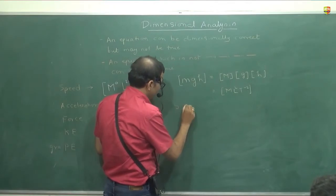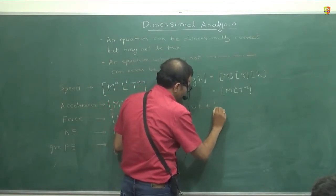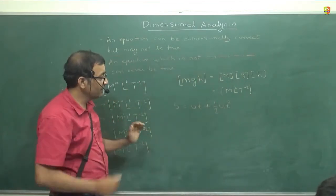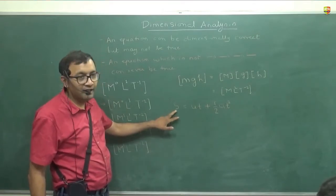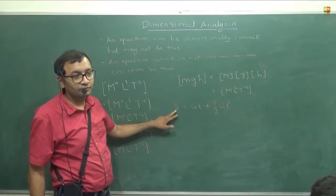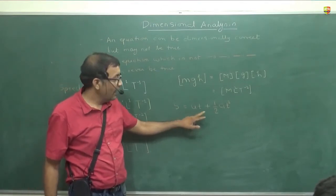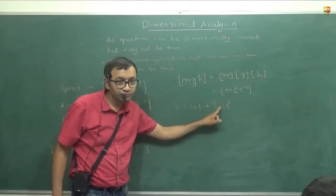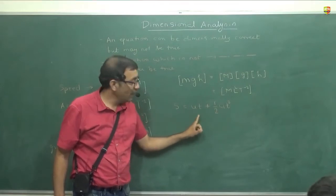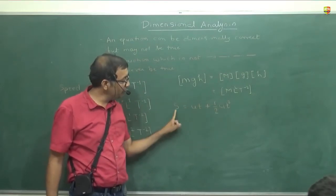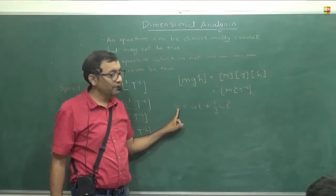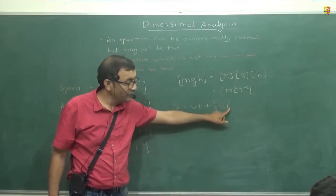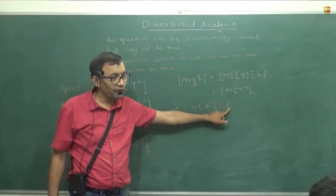S equal to U, T plus half A, T square. Now, tell me, does it make a dimension sense? Dimensionally, does it make sense? If it is making sense, then what should happen? Dimension of Length should be equal to dimension of what? U, T. And A, T square dimension should also be U, T as I mentioned. Because you are adding these two. If you are adding there, dimension should be same. And you are equating. So, there, both dimensions should be equal. Dimension to this also. Dimension of U, T is length. Dimension of A into T square is also length. Meter per second square into second square. Okay?